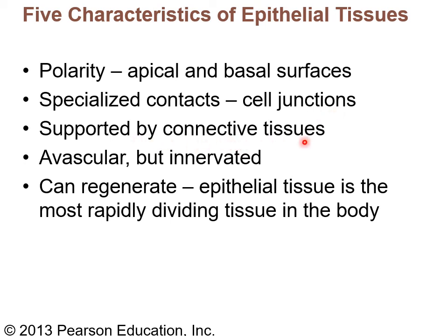An epithelium is supported by connective tissue underneath, which makes it easy to identify under a microscope. Epithelium is avascular — it has no blood supply — but it does have a nerve supply. It can regenerate, and epithelial tissue is the most rapidly dividing tissue in the body. People on chemotherapy recognize this because chemo targets rapidly dividing tissue, affecting not only cancer but also skin, hair growth, and GI tract lining.